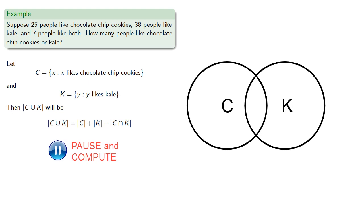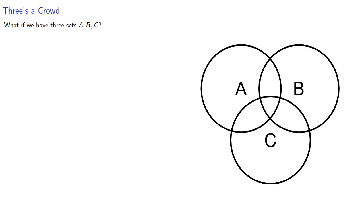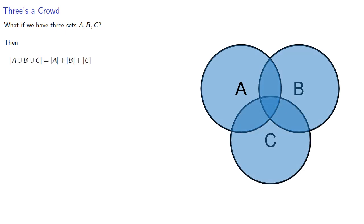What if we have three sets? It's easiest to see how this will work using a Venn diagram for three sets. If we draw a generic Venn diagram, we see that the number of elements in all three sets will be the number in the three sets individually. But note that this will count some elements multiple times — anything in the pairwise intersection of sets will be counted twice, so we'll need to subtract those pairwise intersections.